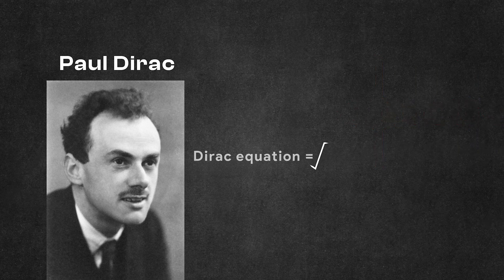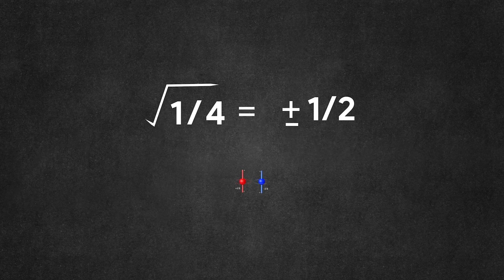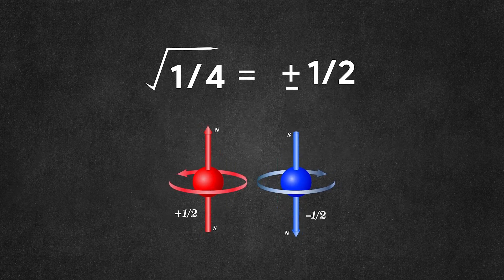The Dirac equation is like the square root of the Klein-Gordon equation. So, as the square root of 1/4 is plus minus half, the Dirac equation elegantly introduces the concept of spin.